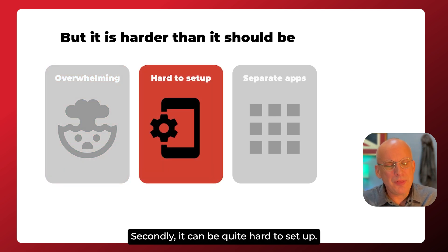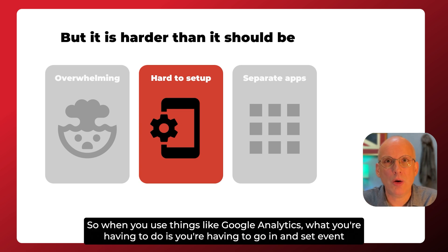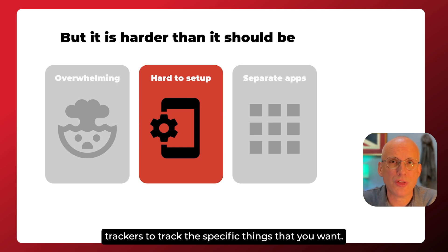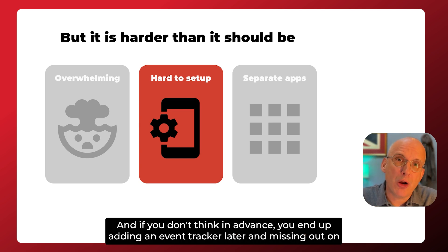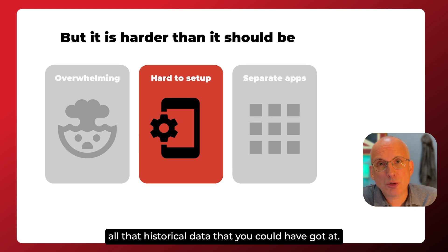Secondly, it can be quite hard to set up. When you use things like Google Analytics, you have to go in and set event trackers to track the specific things that you want. And if you don't think in advance, you end up adding an event tracker later and missing out on all that historical data that you could have had.